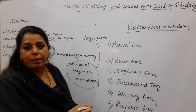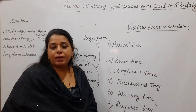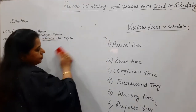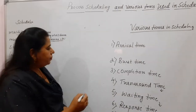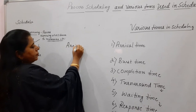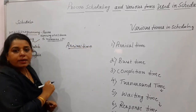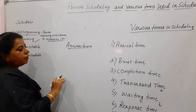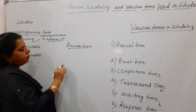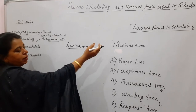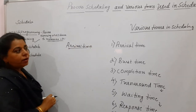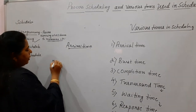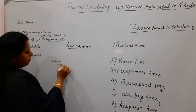There is one more term called multitasking, which I will explain after covering the different times needed for process scheduling. To understand arrival time, let me give a simple illustration. When we carry out scheduling, where exactly is it happening in the system? It is mainly between main memory and the CPU. Let us take these two components as our system, with an entry point and an exit point.